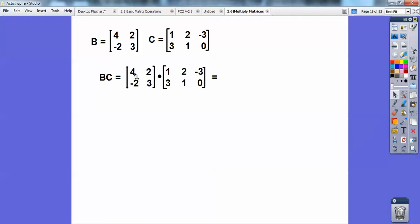And then my next one's going to be 4 times 2 plus 2 times 1. Then my next one's going to be 4 times negative 3 plus 2 times 0. That's going to be my top row. Then my next one's going to be, my bottom row's going to be negative 2 times 1 plus 3 times 3. And then the next one's going to be negative 2 times 2 plus 3 times 1. Next one's going to be negative 2 times negative 3 plus 3 times 0.